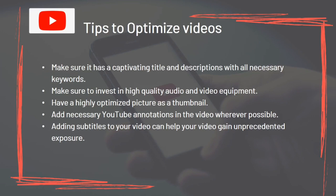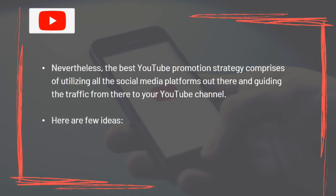To optimize your videos, make sure they have captivating titles and descriptions with all necessary keywords. Invest in high-quality audio and video equipment, have a highly optimized thumbnail image, and add YouTube annotations whenever possible. Adding subtitles to your video can help it gain unprecedented exposure. The best YouTube promotion strategy also utilizes all social media platforms to guide traffic to your YouTube channel.